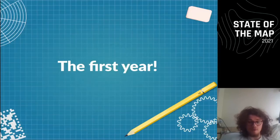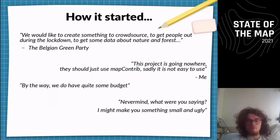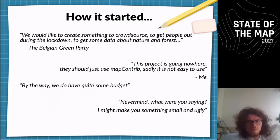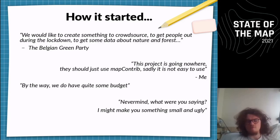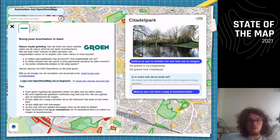How did it get started? During the first Corona lockdown here in Belgium, I got an email from the Belgian Green Party. They wanted to create something to crowdsource — to get people engaged with nature and forest. They also wanted a road planner, demographic information, pictures, and reviews — everything you could ever imagine. I was a bit skeptical at first. I wanted to let them use MapContrib, but it wasn't user-friendly enough. Then they mentioned they had some budget, and I promised them to make something — even though it would be ugly, as I had no front-end experience. That first theme was Buurtnatuur BE. It was still a little ugly, but that was how it looked.